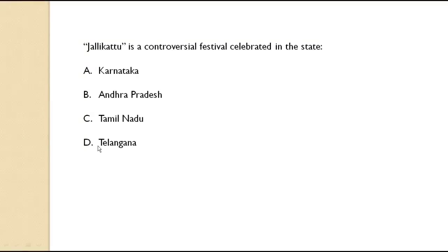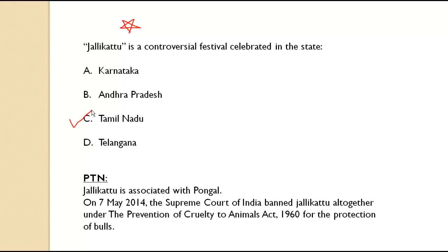Jallikattu is a controversial festival celebrated in which state? It is mainly Tamil Nadu. Jallikattu is associated with the Pongal festival. It involves bulls, and due to the Prevention of Cruelty to Animals Act, the Supreme Court banned this practice in 2014. However, protests and controversy around it continue.